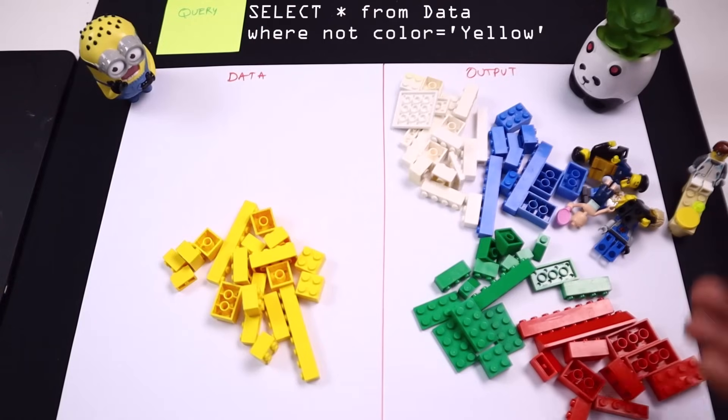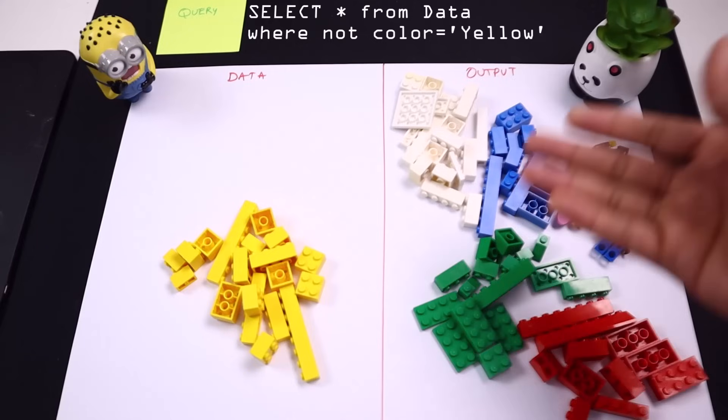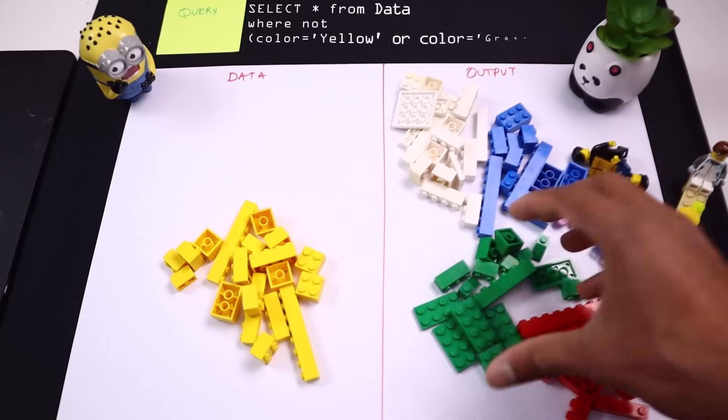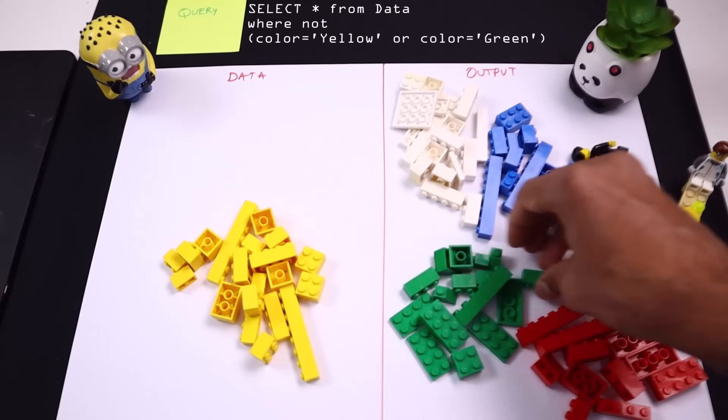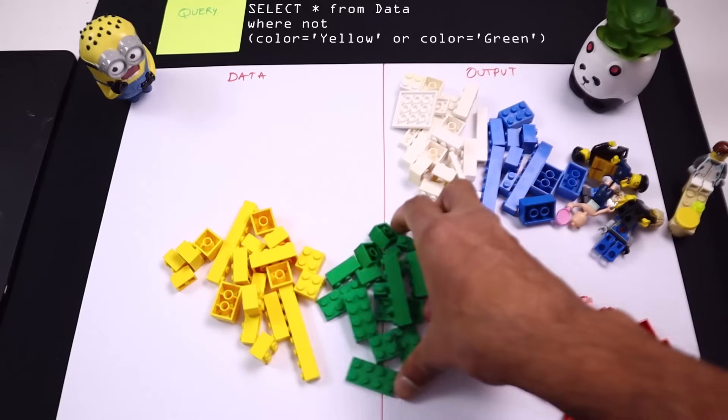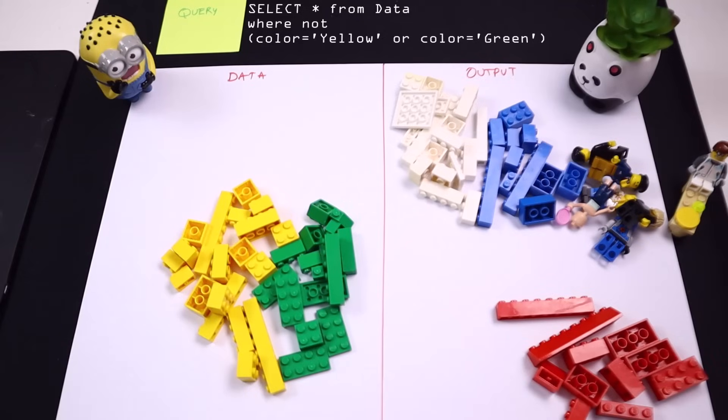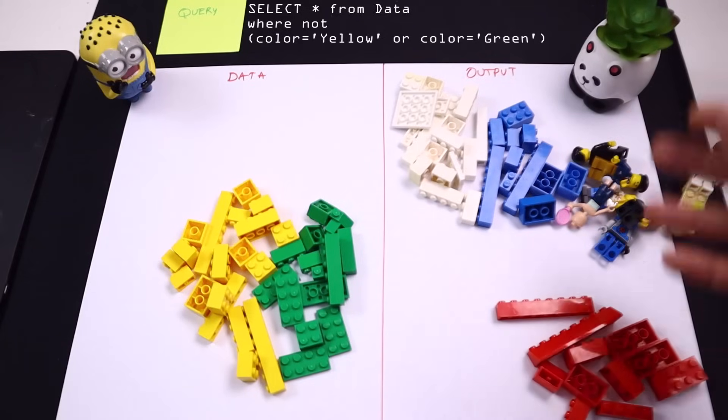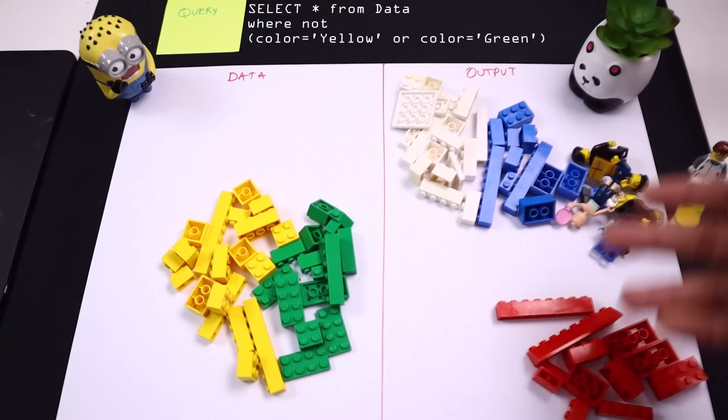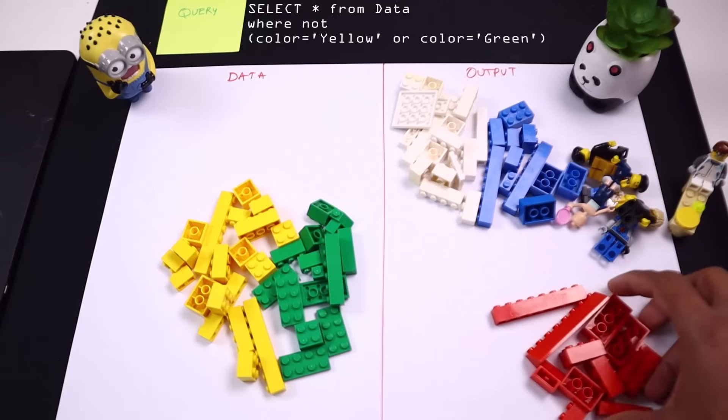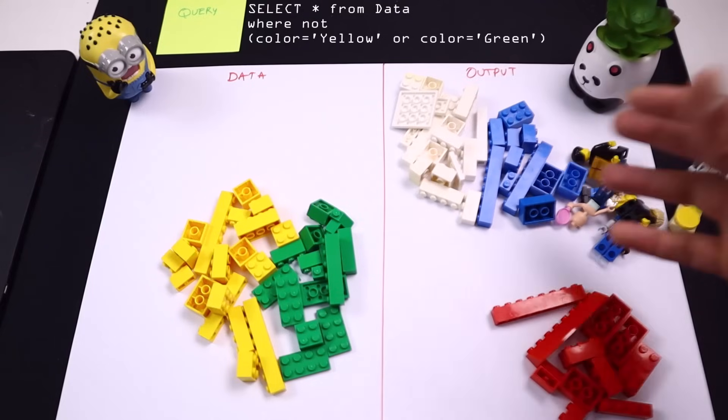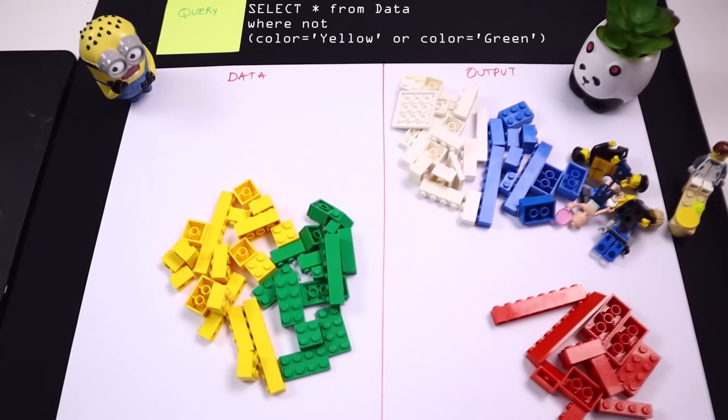You could kind of imagine different combinations of this. So for example, you could say color NOT in yellow and green, and then what that will do is it will basically give you this output here where you have got everything else except yellow and green. And when you get this data, you can also apply a sort order. You can also add an order by clause here.